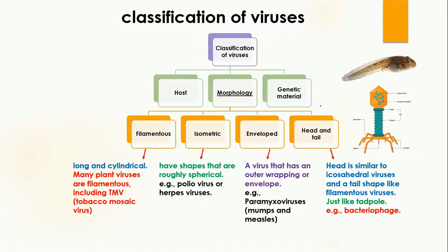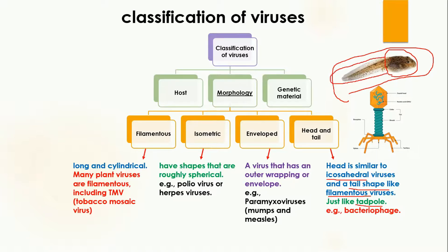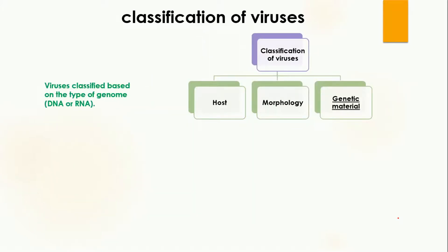The last morphological type is head-and-tail virus. Their head is similar to icosahedral viruses — having more than 12 dimensions — while their tail has a filament-like shape. Overall, head-and-tail viruses look like a tadpole: the head is spherical or icosahedral while the tail is like a filament. The example of head-and-tail virus is bacteriophage. Here in this diagram you can see the head and the tail.